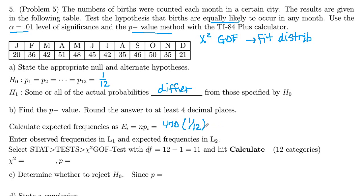And 470 times 1/12 is 39.25. So we're trying to test and see, we would expect if the null hypothesis is true, that all of these numbers would be 39.25. Those are the expected frequencies.